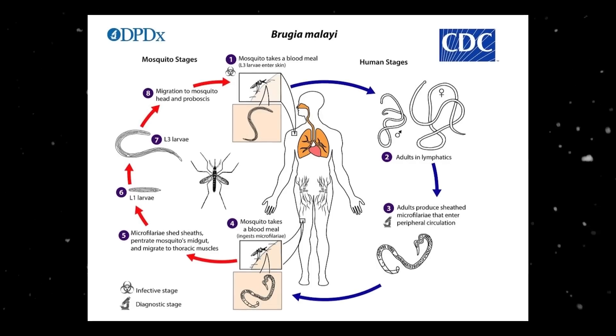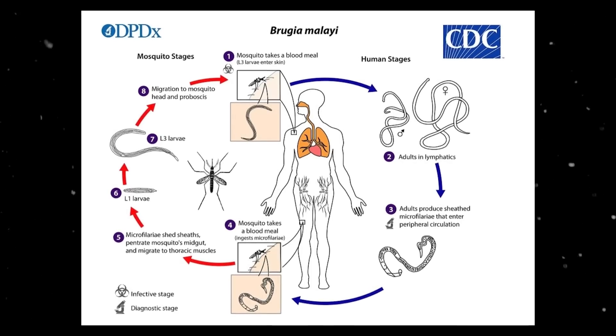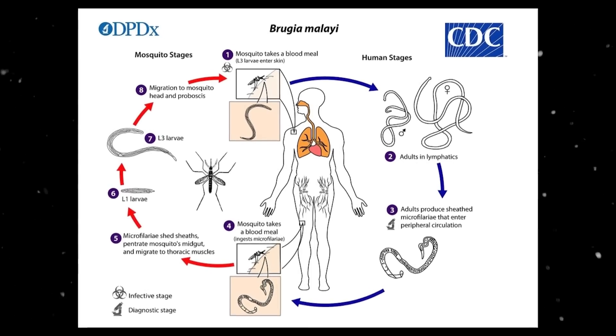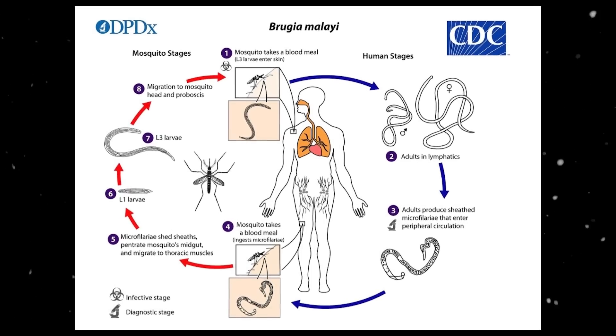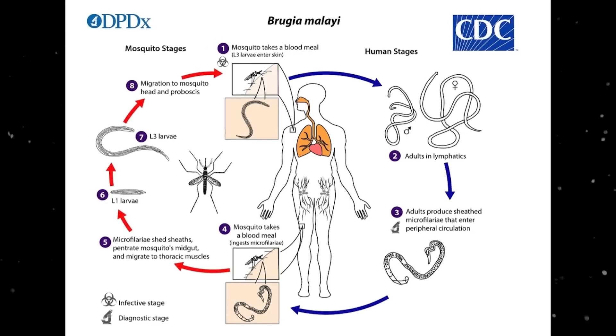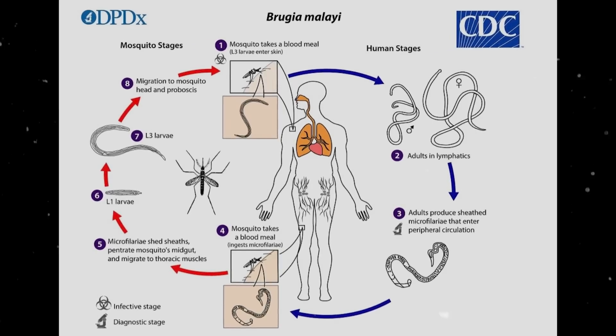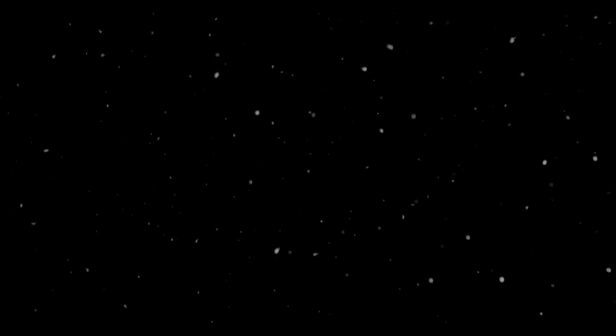As the larvae multiply, the person's lymphatic system will become clogged by the worms, resulting in a reduced flow of lymph fluid from the tissues. This backed-up fluid and the person's immune system response, triggered by the presence of worms, will then cause swelling and inflammation.